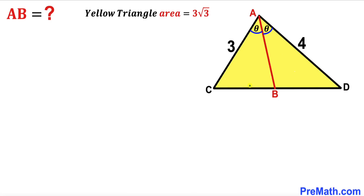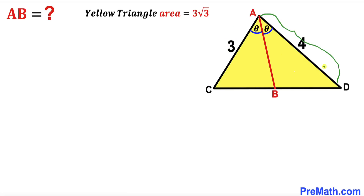Welcome to PreMath. In this video we have got this yellow triangle ACD along with this angle bisector AB, such that angle CAB is theta and likewise angle DAB is theta as well. Moreover, side length AC is 3 units whereas side length AD is 4 units, and the area of this yellow triangle ACD has been given as 3 times square root of 3 square units. Our task is to find the value of this angle bisector AB.